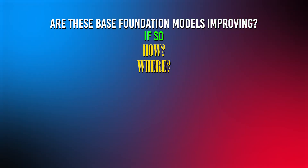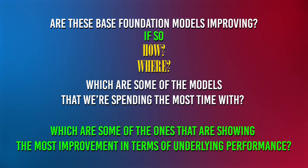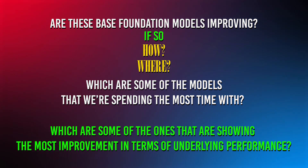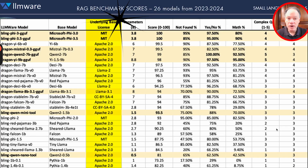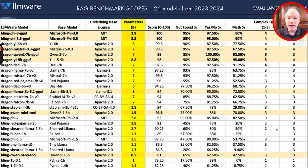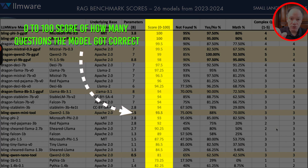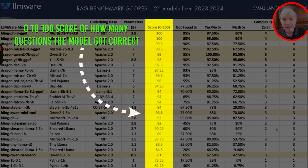If so, how and where? Which are some of the models we're spending the most time with, and which are showing the most improvement in underlying performance? You see the licensing parameters — there's been a lot of positive standardization over the course of the last year, moving in the direction of Apache 2 and MIT. The parameters are in the next column, and then the column next to that is probably the single most important in this table: that is the score — the 0-to-100 score of how many questions the model got correct on our test.